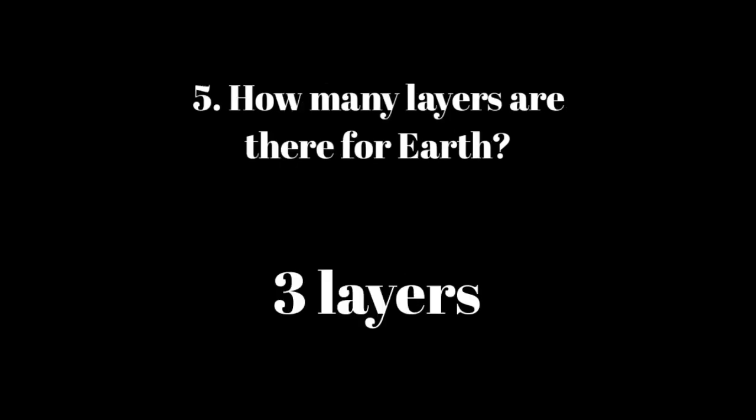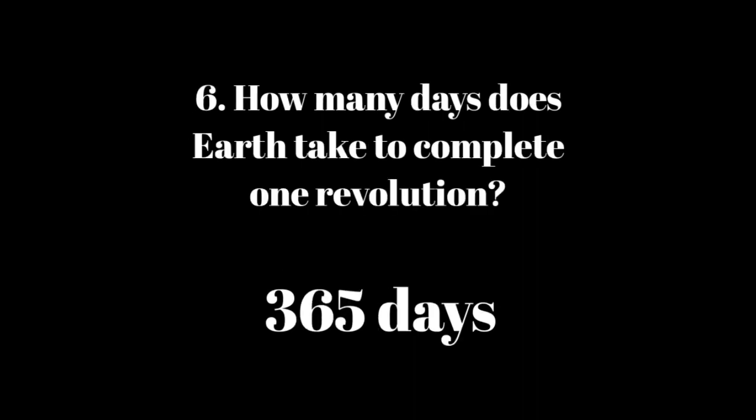Question 5: How many layers are there for Earth? Answer: 3 layers. Question 6: How many days does Earth take to complete one revolution? Answer: 365 days.